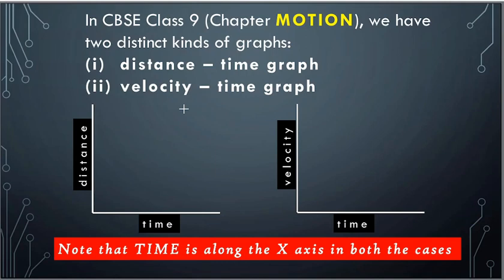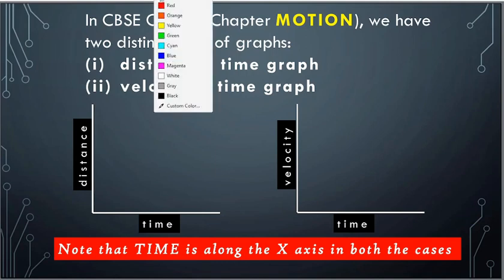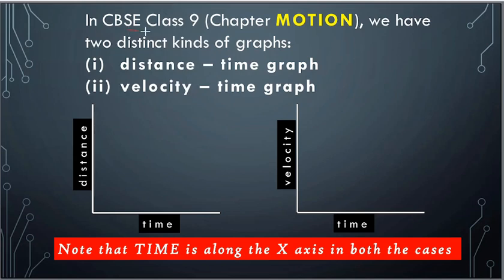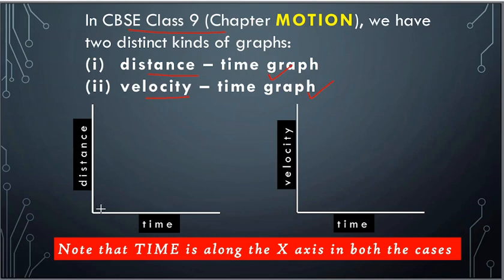In the CVSA syllabus for class 9, we have two distinct kinds of graphs: distance-time graph and velocity-time graph. The distance-time graph with some modification could be a displacement-time graph, and the velocity-time graph could be a speed-time graph. But in the CVSA syllabus, it is distance-time graph and velocity-time graph. Note that time is along the x-axis in both cases.